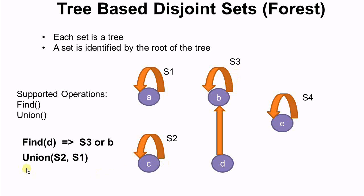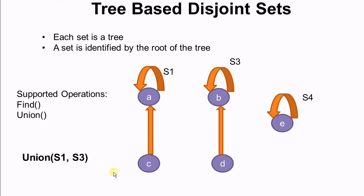When we call union(S2, S1), we are merging S2 and S1 into one disjoint set. The result is that S2 is gone and C is no longer a root. Both A and C belong to S1, and S1 is represented by its root A.